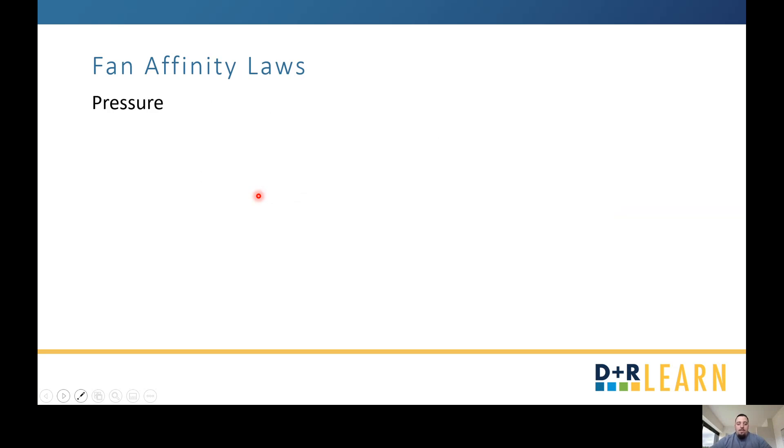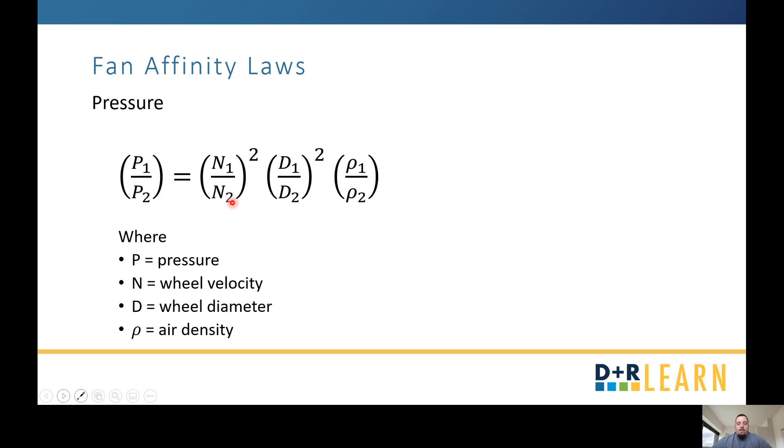Let's go ahead and move on to our second law, which is in regards to pressure. Here's our pressure, usually in inches water gauge, since we're talking about duct static pressure for an air handling unit. Here's our wheel velocities, which are now squared. Our wheel diameters, which are also squared. And these new variables, which is your air density.